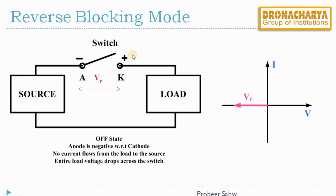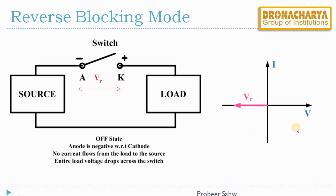The next mode is reverse blocking mode. As the name suggests, reverse means the anode is at lower potential than the cathode. This will happen when the load voltage becomes higher than the source voltage. Since the switch is open in this mode, there will be no current flowing through the switch, and the entire load voltage will appear across the switch. We can show the VI characteristics as shown in the figure to the right — there will be a reverse voltage that is blocked by this switch.